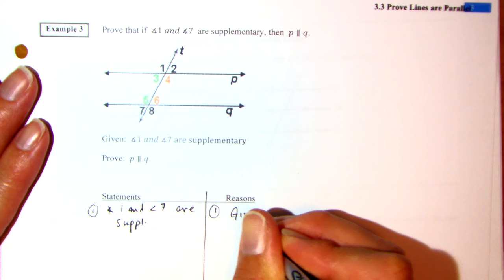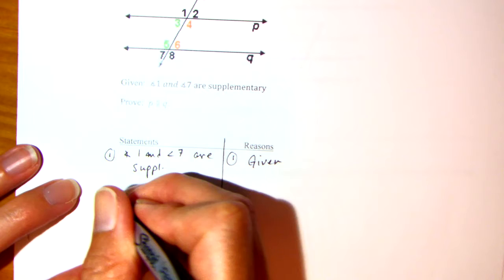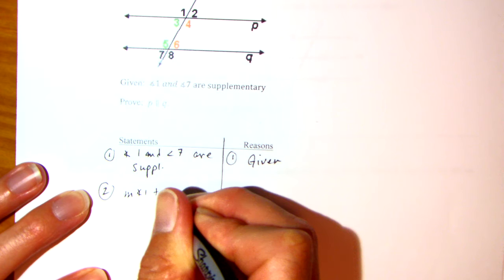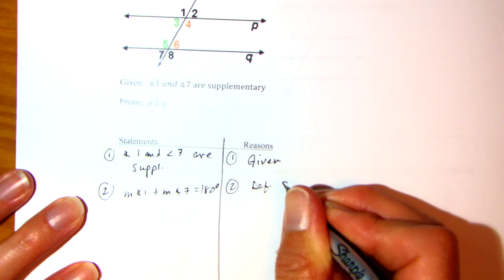If you're given a proof and you don't know where to start, you get a point for writing what's given. Number 2: because they tell me they're supplementary, the measure of angle 1 plus the measure of angle 7 is equal to 180. That's the definition of supplementary angles.